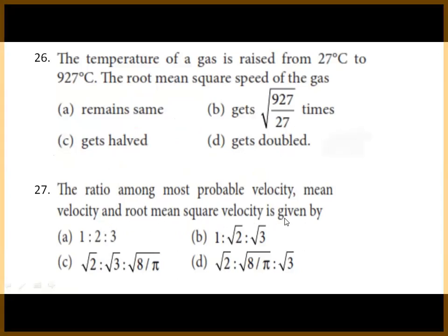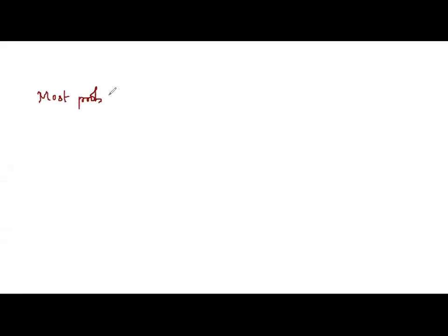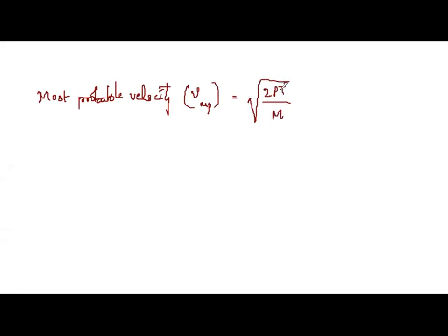Next question: the ratio among most probable velocity, mean velocity, and root mean square velocity. We know all the formulae. Most probable velocity, represented as V_mp, is equal to √(2RT/M).